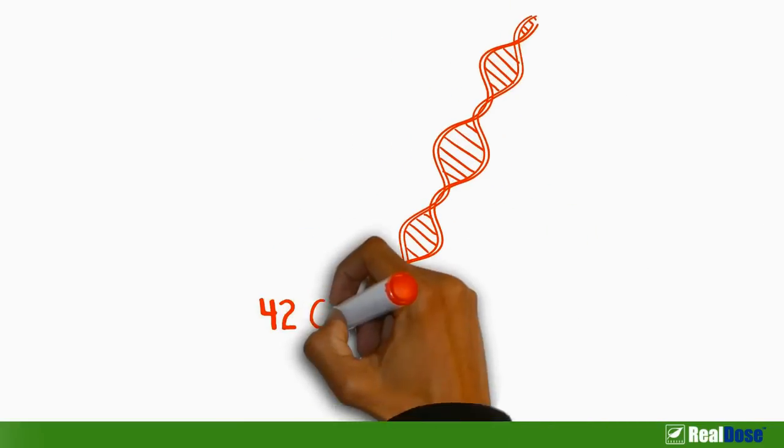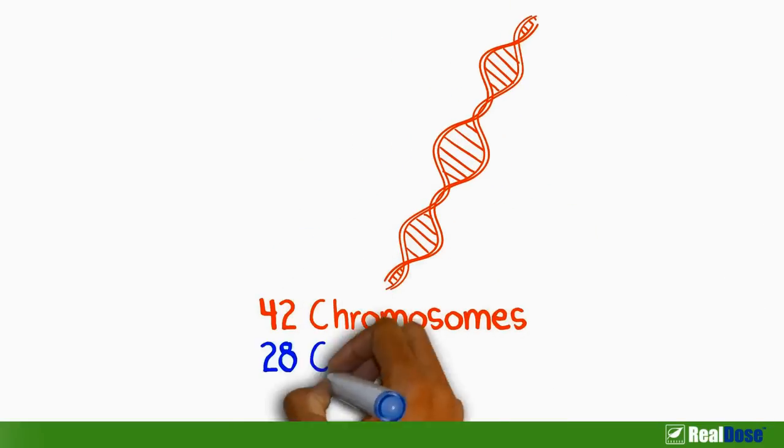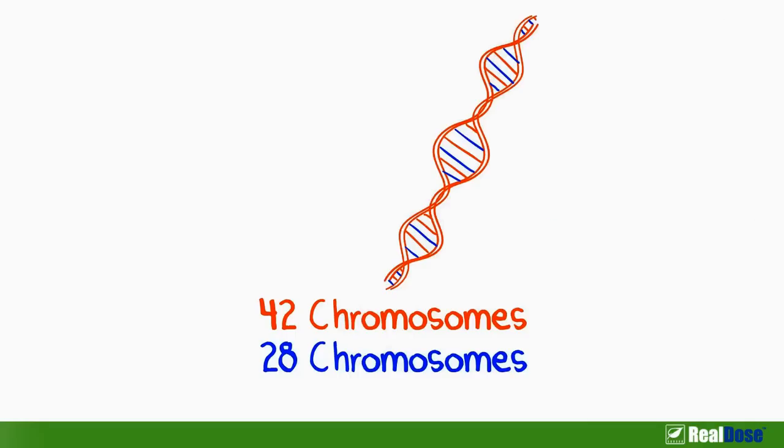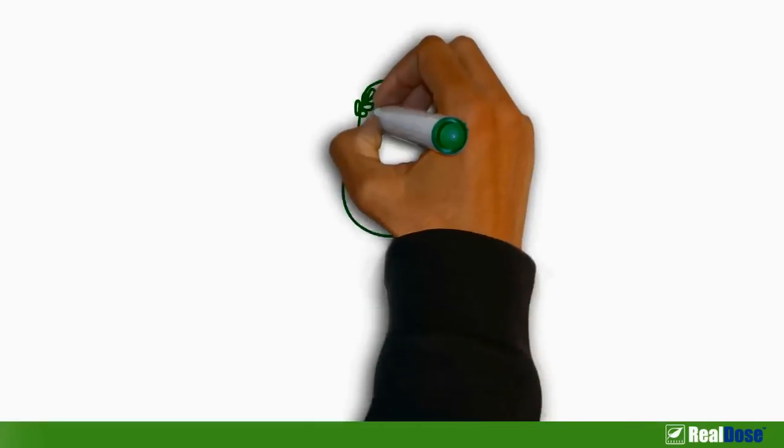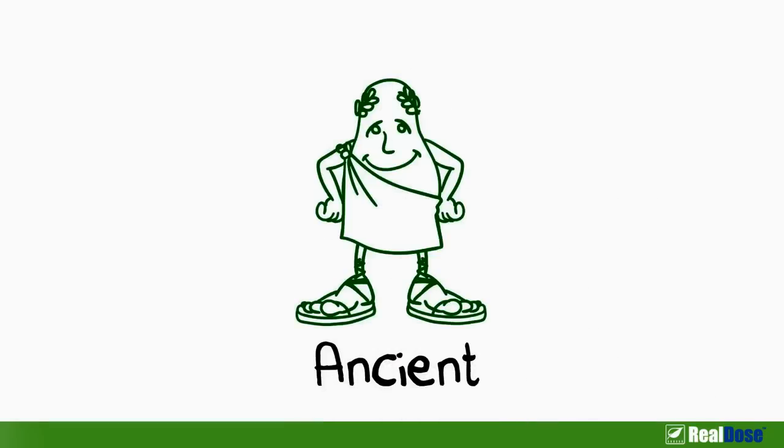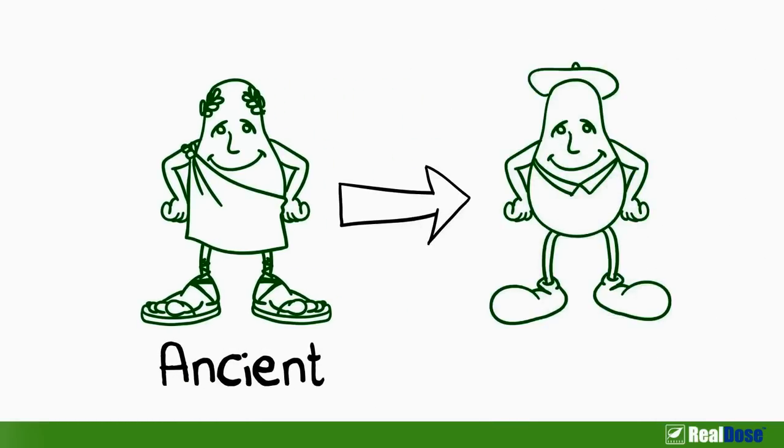And then there is the scary fact that modern wheat contains 42 chromosomes, 28 more than ancient wheat, and leads to multiple health issues. Quite frankly, this is pretty scary. Ancient wheat isn't exactly good for you, but modern wheat is far more troublesome.